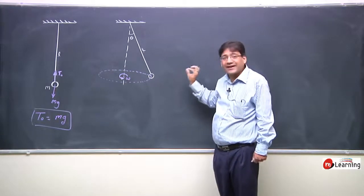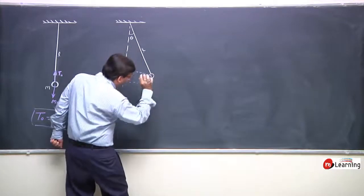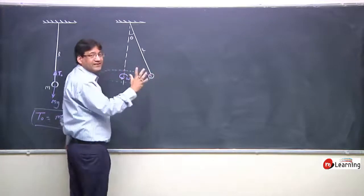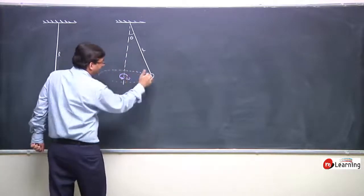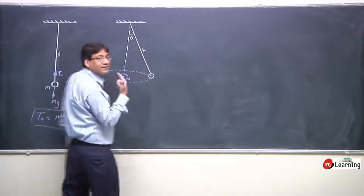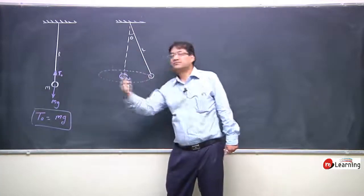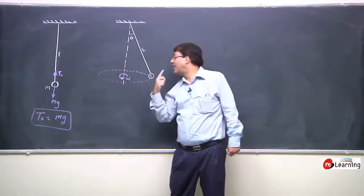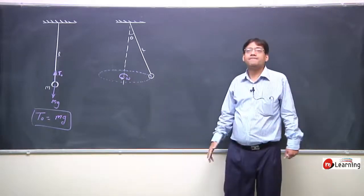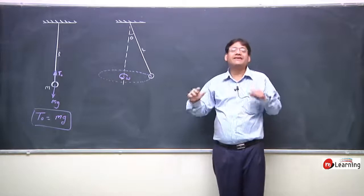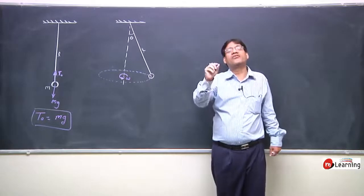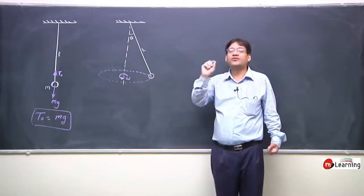The assignment is: write the equation of dynamics for this situation — the conical pendulum. The particle executes circular motion and we need to apply Newton's laws to find the relationship between theta, omega, and the other parameters.